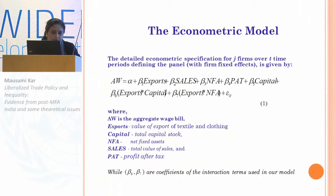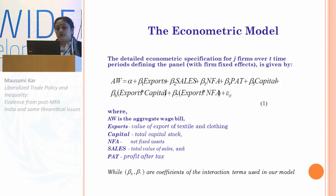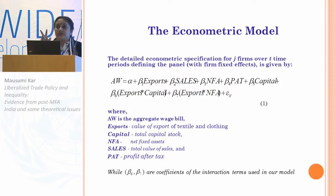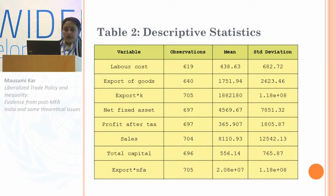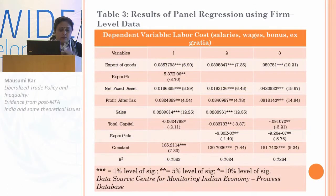Now we start with the econometric model. The detailed econometric specification for G firms over T time periods defining the panel with firm fixed effects is given by this equation. Per AW is the aggregate wage bill and the other variables are shown accordingly. Two interaction terms are incorporated: beta 6 and beta 7 are the coefficients of those interaction terms — one is export interacted with capital, and the other is export interacted with NFA. In Table 2 we show the descriptive statistics, and in Table 3 we show the results of the panel regression using firm-level data.